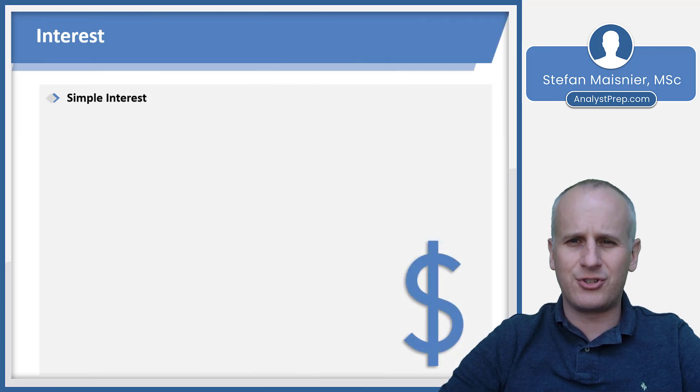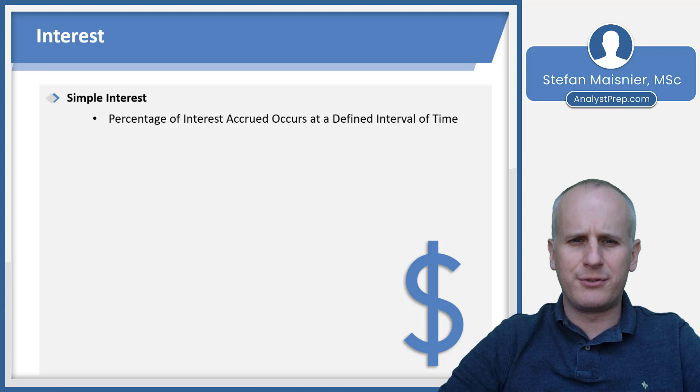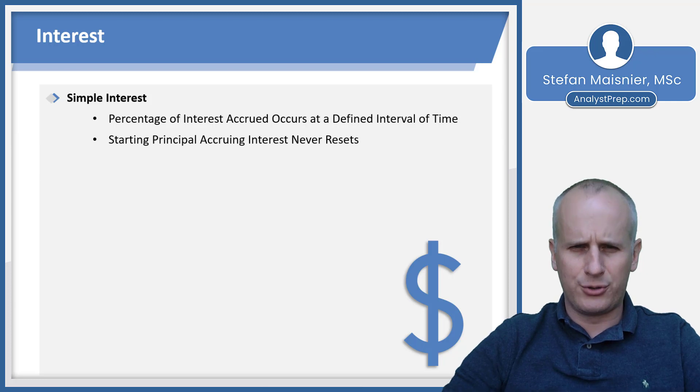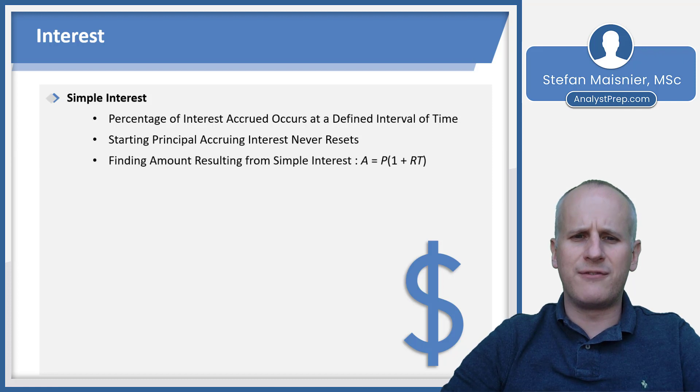So let's first just define how interest works when it's simple. Simple interest is the percentage of interest that accrues over a defined interval of time, and your starting principle with simple interest never resets. You can find the result from simple interest using the formula A equals P times the quantity 1 plus RT.